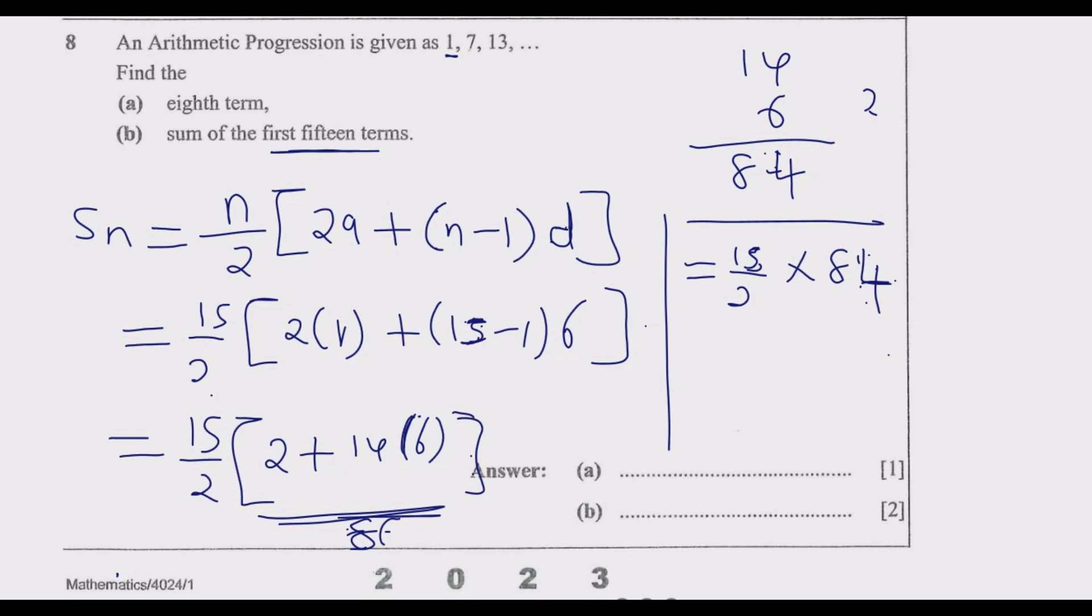Now what we do is divide this 2 into 86. We are going to end up with 15 multiplied by 43, because 2 into 2 is 1, and 2 into 8 is 4.